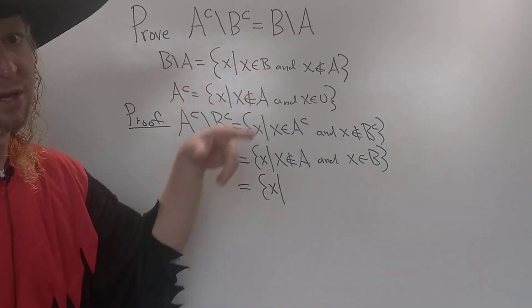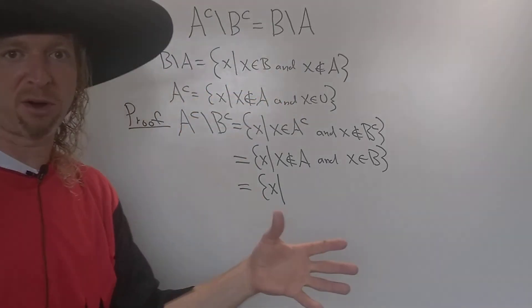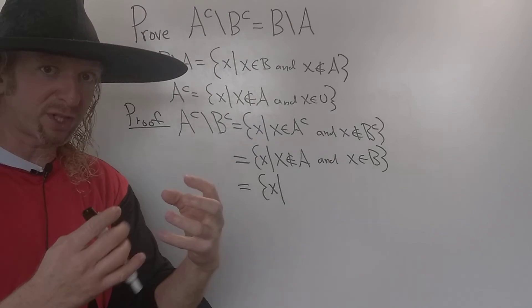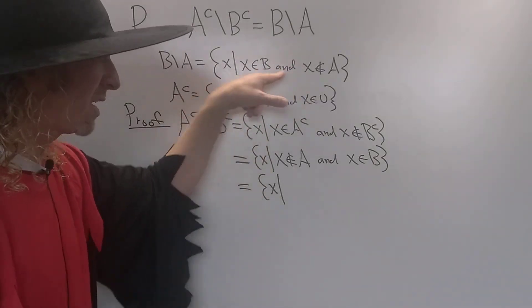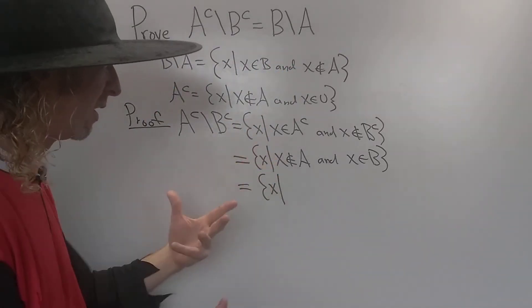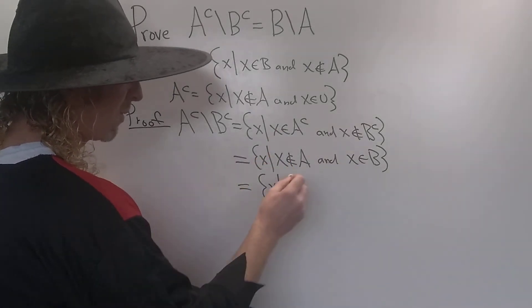But the AND is commutative. In the theory of logic, that's where this all comes from. It's where roots come from. So you can do that. The AND operation in logic is commutative.